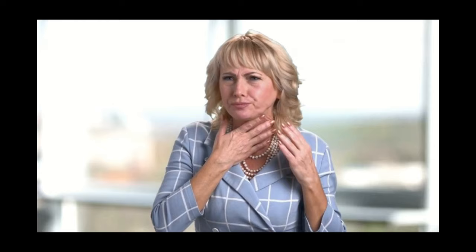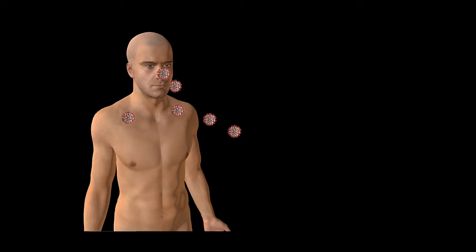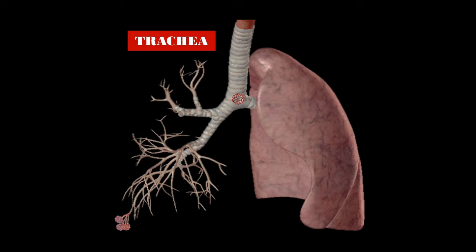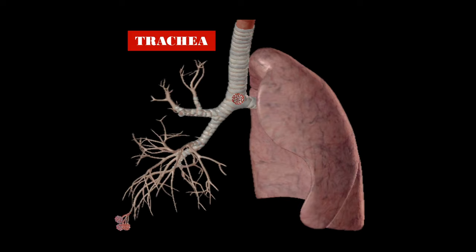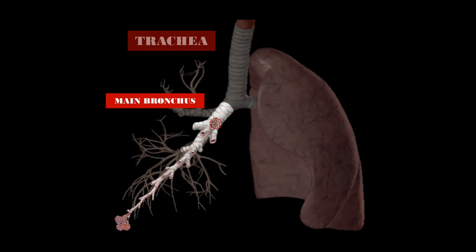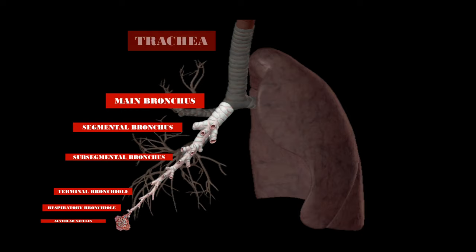When someone infected with COVID-19 talks, coughs or sneezes, droplets carrying the virus travels through the air and may get into your mouth and nose and then going down to land into your lungs. It will follow a long road through the airways, passing all the way through the trachea and then it will pass through the main bronchus, segmental bronchus, subsegmental bronchus, the terminal bronchiole, respiratory bronchiole and finally in the alveolar sacs.